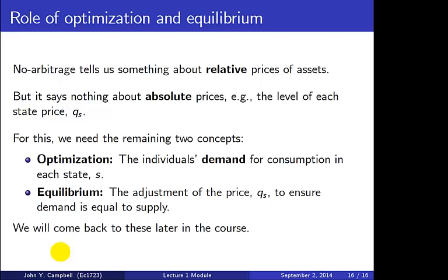For our last slide, linking back to the three concepts from the beginning: we've talked about arbitrage. The no-arbitrage assumption tells us something about relative prices of assets, but says nothing about the absolute level of each state price Q-s. To study what determines state prices, we'll need the other two concepts — optimization, which tells us how individuals demand consumption in each state s, and equilibrium, which is the adjustment of prices Q-s to ensure demand equals supply. We'll come back to those concepts later in the course. I hope you've enjoyed this module and welcome you to Economics 1723.